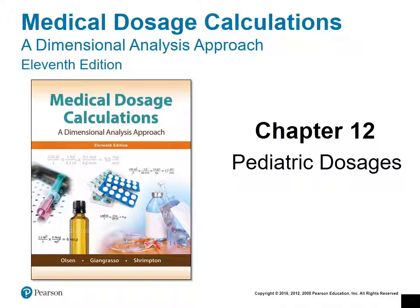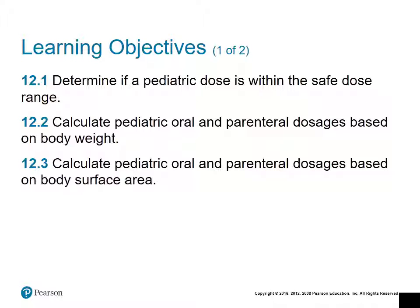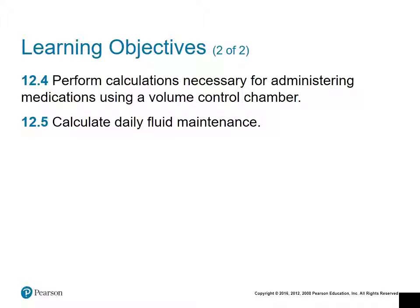Chapter 12: Pediatric Dosages. When working with children it's especially important that we check that our calculated amount of medication is within the safe dosage range. We're going to be calculating oral and parenteral dosages based on body weight and body surface area, and also performing calculations using a volume control chamber and calculating daily fluid maintenance.